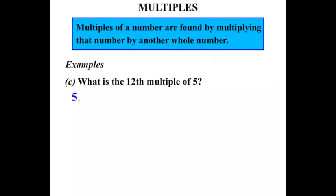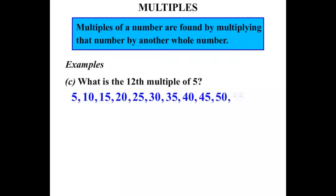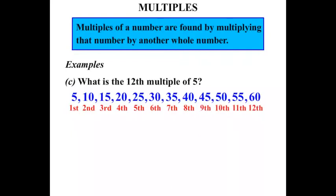Multiples of 5: 5, 10, 15, 20, 25, 30, 35, 40, 45, 50, 55, 60. Counting through: first, second, third, fourth, fifth, sixth, seventh, eighth, ninth, tenth, eleventh, twelfth. So we got there — the twelfth multiple of 5 is going to be 60.